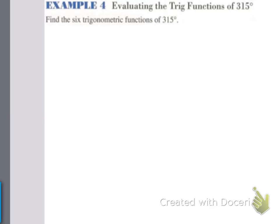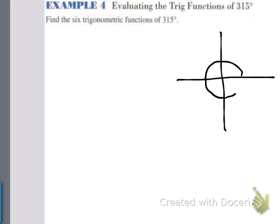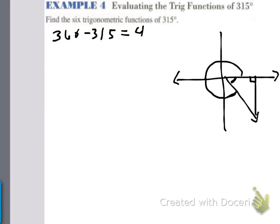Example 4 — evaluating the trig functions of 315 degrees. We want to find all 6 trig functions of 315 degrees. From here to here is 180, then 270, and this right here is our 315-degree angle. We draw our reference triangle by dropping a perpendicular to the x-axis. To find what this reference angle is, we do 360 minus 315, which equals 45. So that's a 45-degree reference angle there.